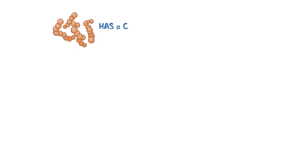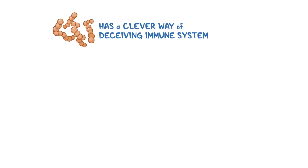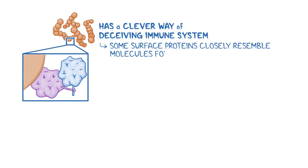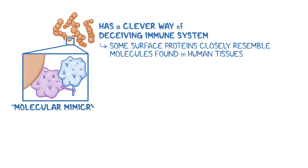Strep, however, has a clever way of deceiving the immune system. Some of its surface proteins closely resemble molecules found in human tissues, a mechanism called molecular mimicry.